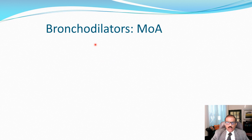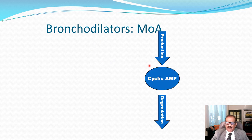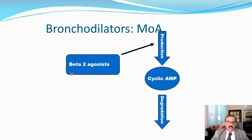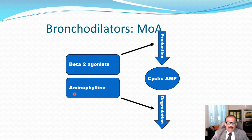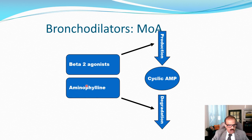Regarding the mechanism of bronchodilators: the basic purpose is to increase the level of cyclic AMP. Beta-2 agonists increase the production of cyclic AMP, while aminophylline and theophylline reduce its degradation. Combining beta-2 agonists with oral theophylline therefore has an additive bronchodilatory effect. In our society, theophylline is fairly popular because it is cheap and generally well-tolerated.